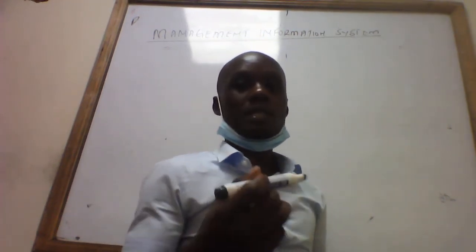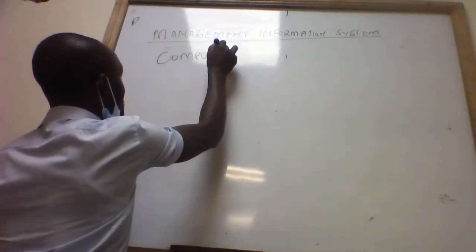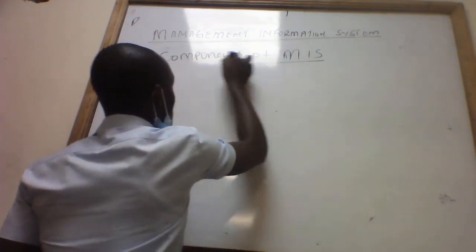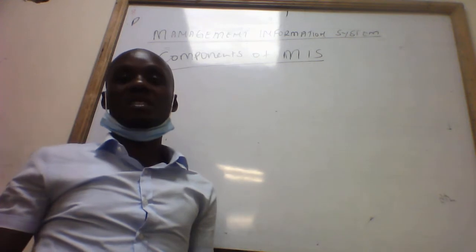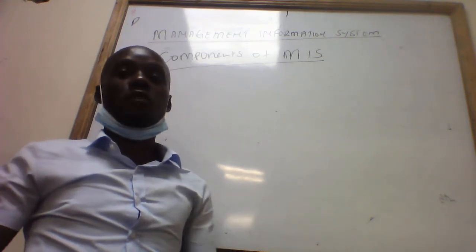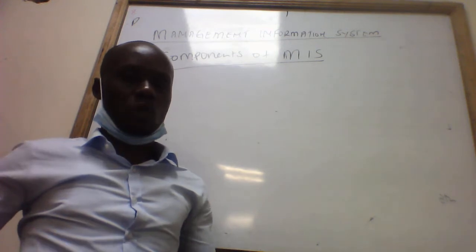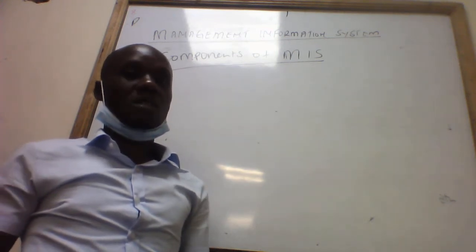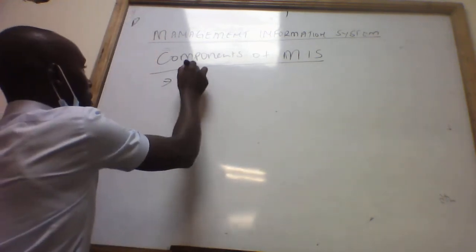Welcome learners. In today's lesson we are going to look at components of management information system. Components are the same as elements, or parts, or what makes up an information system. This is a system and it has interdependent components which must work together so that the system can achieve its objectives. Component one is people.